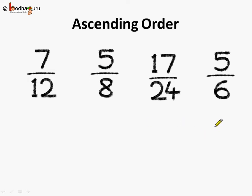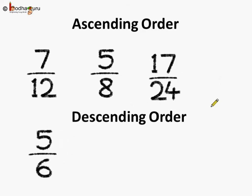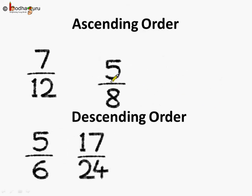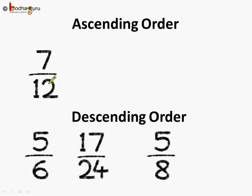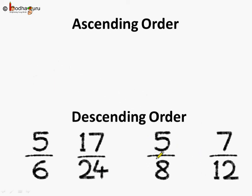Now, how to get the descending order? Well, we will just put them in the reverse order. So, for the descending order, 5 by 6 goes first, then comes 17 by 24, then comes 5 by 8, and then comes 7 by 12. So, this is the descending order of the fractions.